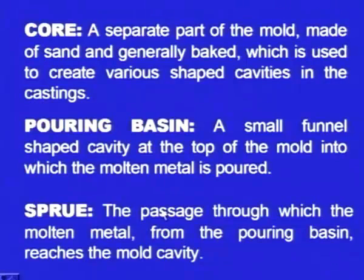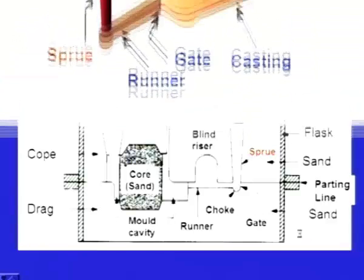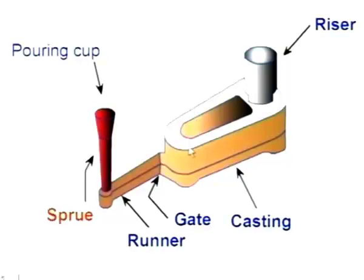Next one is sprue. It is the passage through which the molten metal from the pouring basin reaches the mould cavity. The molten metal passes from the pouring basin through the sprue — the vertical passage — then reaches the choke area, then passes through the runner, and finally falls into the cavity. Here we can see the pouring cup, the sprue, and the runner shown without moulding boxes.